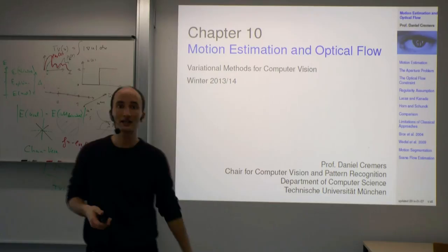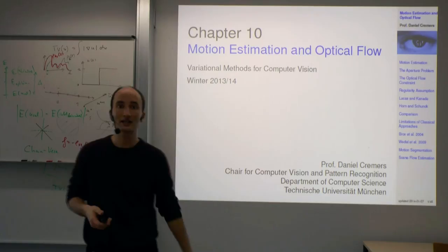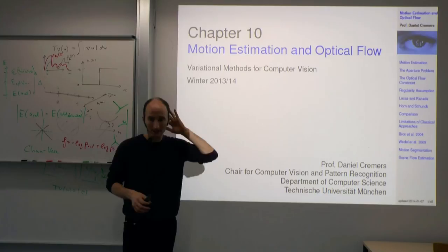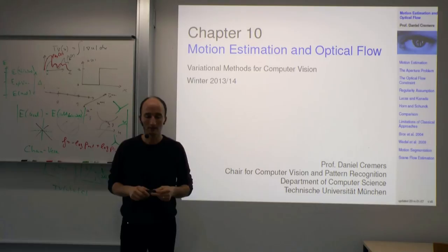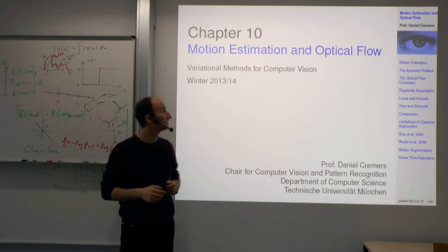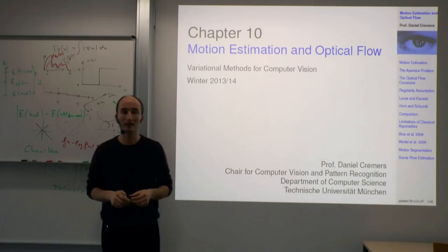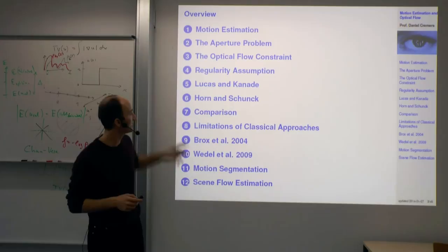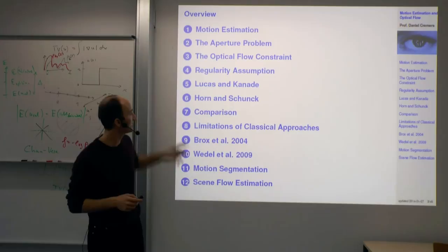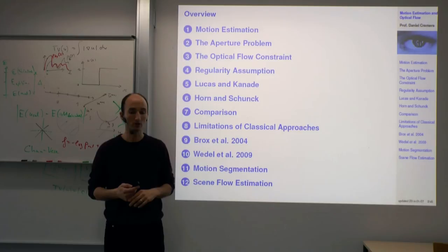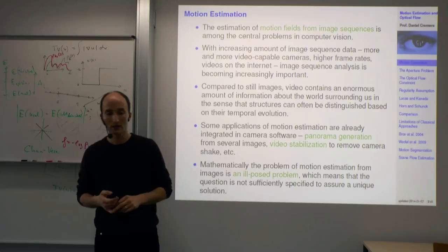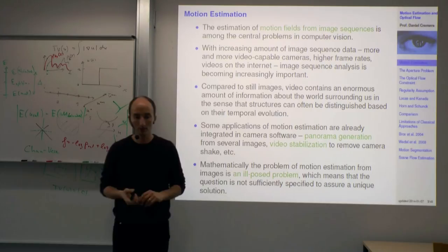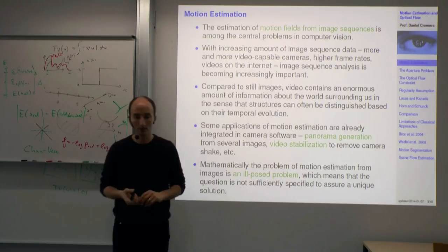Welcome to the next chapter on variational methods for computer vision — Chapter 10 on motion estimation and optical flow. Although this chapter covers more advanced functionals and more difficult problems, it is interesting because it takes us back to the origins of variational methods in computer vision. There are many sections because optical flow and motion estimation is a very well-studied and important problem.